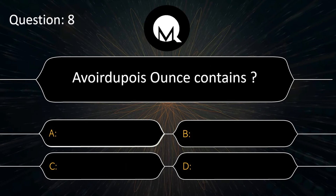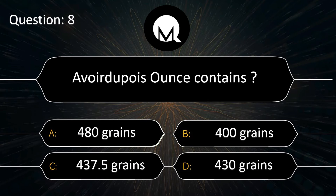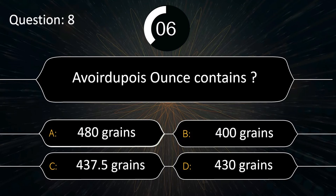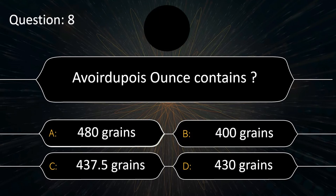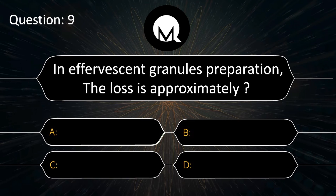What does an avoirdupois ounce contain: 480 grains, 400 grains, 437.5 grains, or 430 grains? Answer is 437.5 grains.